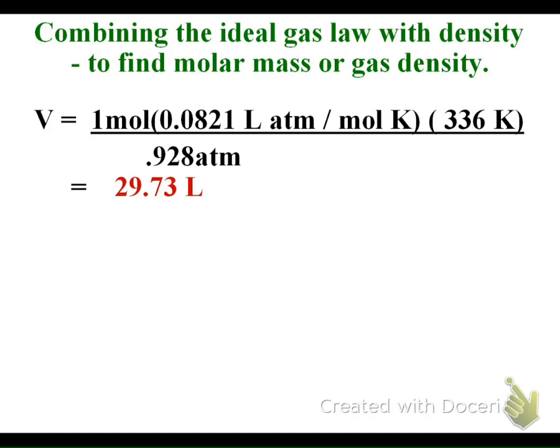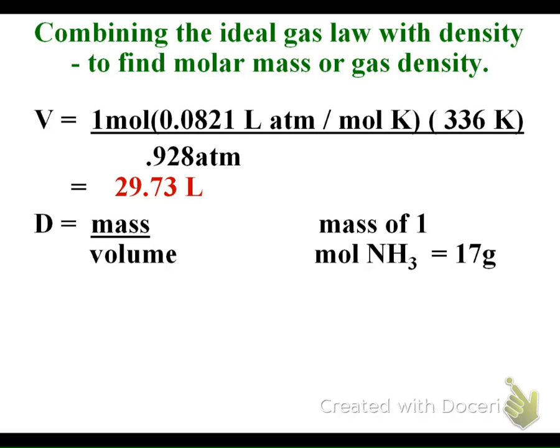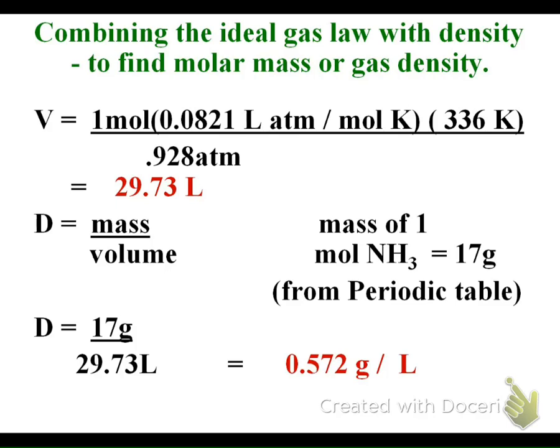My initial problem asked me to find the density. The only way I'm able to find density is I know what compound I'm talking about. Density equals mass divided by volume. I know I have one mole of ammonia, which weighs 17 grams. So my mass is 17 grams. I divide it by the volume I just found, 29.73 liters, to get my density of 0.572 grams per liter.